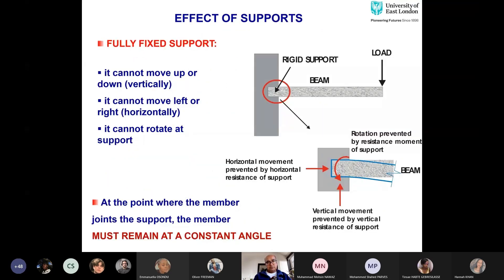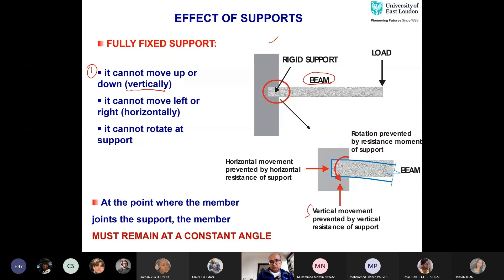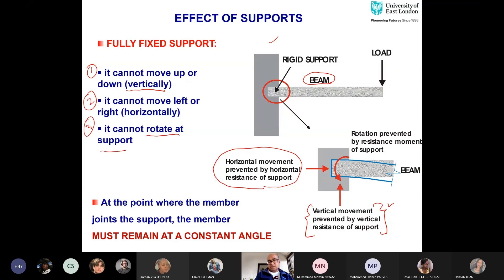The first thing to talk about is the effect of supports. A fully fixed or built-in support is a rigid support. At a fixed support, we can expect three reactions: it cannot move up or down (vertical reaction), it cannot move left or right (horizontal reaction), and it cannot rotate at the support. So three deflections are prevented: vertical movement, horizontal movement, and rotation.